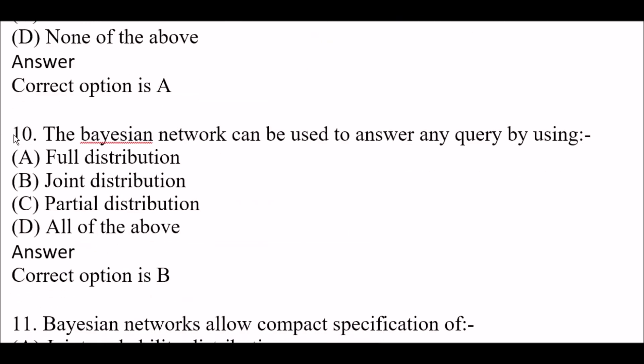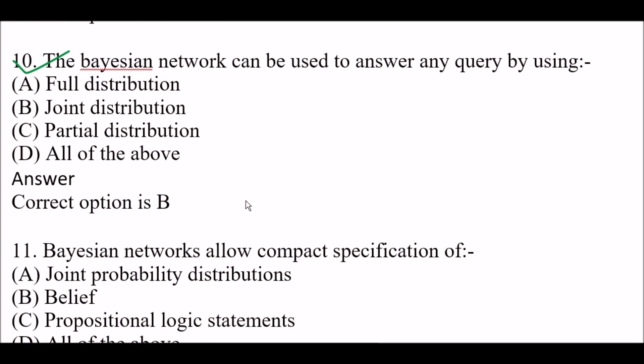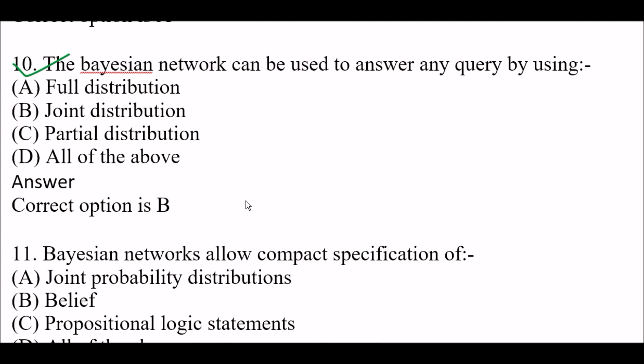Next question: The Bayes network can be used to answer any query by using — Option A: Full distribution, Option B: Joint distribution, Option C: Partial distribution, Option D: All of the above. Right answer is Option B — the Bayes network can be used to answer any query by using joint distribution.